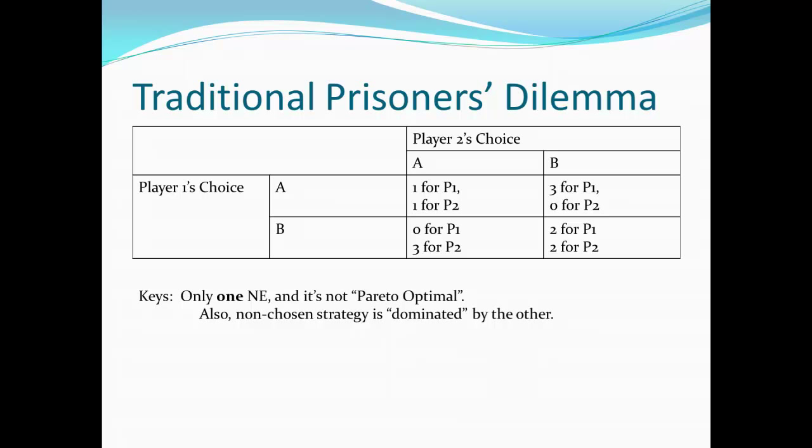Player 1 gets to pick our row, either row A or row B. Player 2 gets to pick the column, either A or B. And we can see here what we call the game matrix, describing the four different possible outcomes. If both play A — that is, we end up in row A and column A — then player 1 and player 2 each get 1. If they both choose B, row B column B, then player 1 and player 2 each get 2.